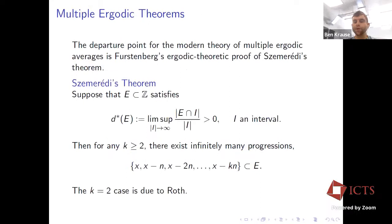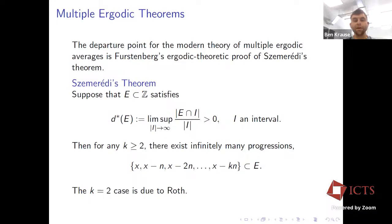Once we switch from a single average to multiple averages, problems get much harder. The motivating example is Szemerédi's theorem, which was addressed using ergodic-theoretic methods by Furstenberg. The statement is that for any subset of the integers that is somewhat large — meaning I can find some increasing sequence of intervals so that my relative density inside these intervals stays bounded away from zero — then for any K ≥ 2, I can find infinitely many arithmetic progressions of length K. The K = 2 case, concerning 3-APs, was first due to Roth.